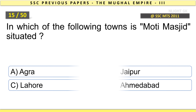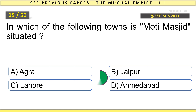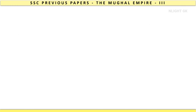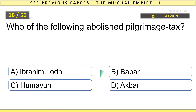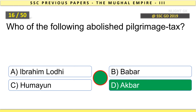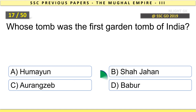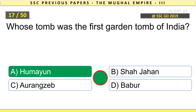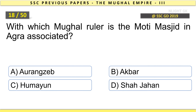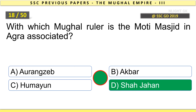In which of the following towns is Mughal Masjid situated? Agra. Who among the following abolished pilgrimage tax? Akbar. Whose tomb was the first garden tomb of India? Humayun. With which Mughal ruler is the Mughal Masjid in Agra associated? Shah Jahan.